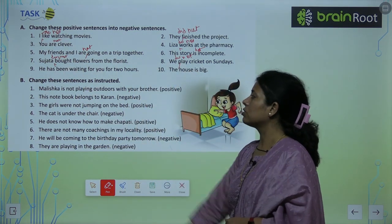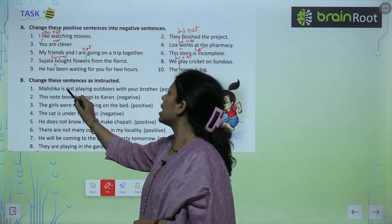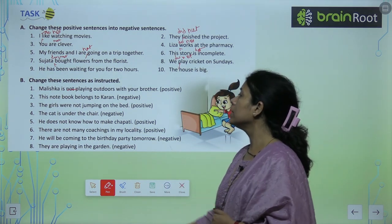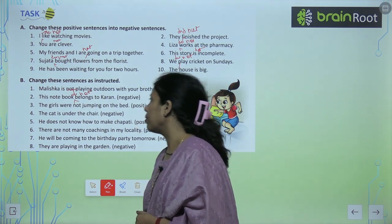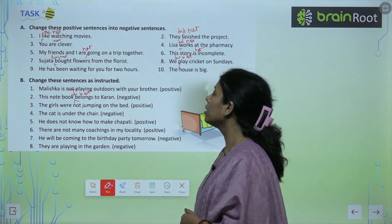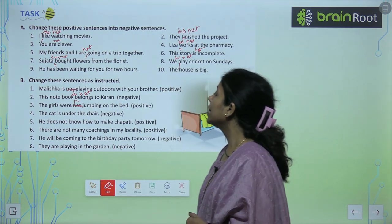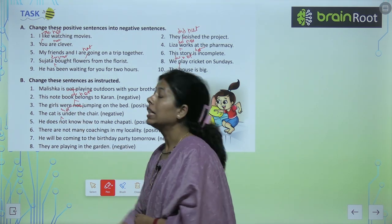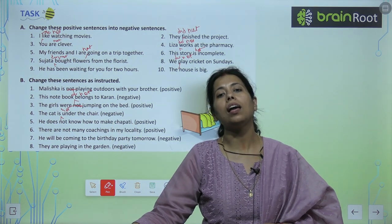Change these sentences as instructed. 'Manisha is not playing outdoor' → positive: 'Manisha is playing outdoor.' 'This notebook does not belong to current' → positive: 'This notebook belongs to current.' 'The girls were not jumping' → positive: 'The girls were jumping.' 'The cat is not under the chair' → positive: 'The cat is under the chair.'